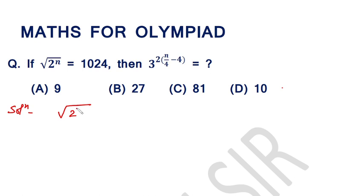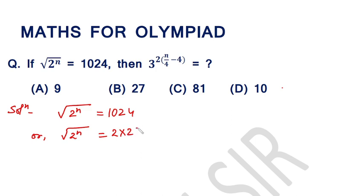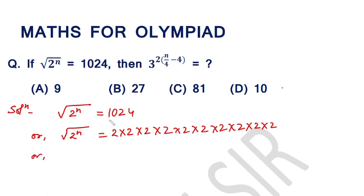The square root of 2 raised to the power n is equal to 1024. After a prime factorization of 1024, we count the factors of 2: 1, 2, 3, 4, 5, 6, 7, 8, 9, 10 — giving us 2 raised to the power 10. So we can write: square root of 2 raised to the power n is equal to 2 raised to the power 10.